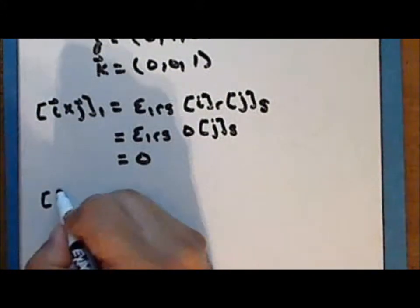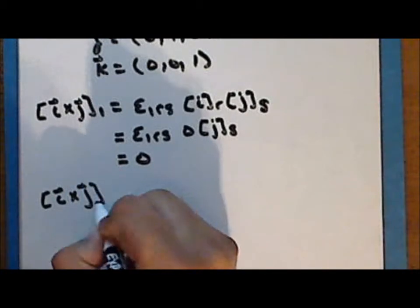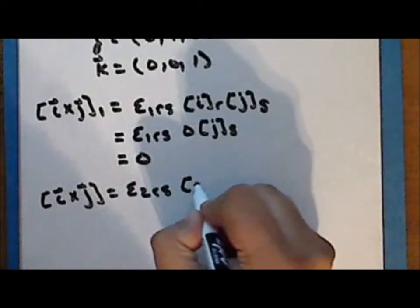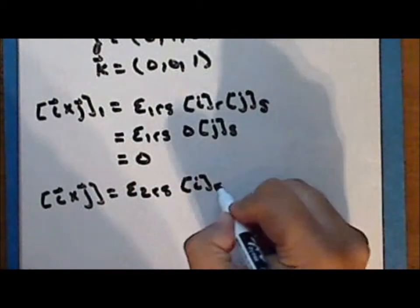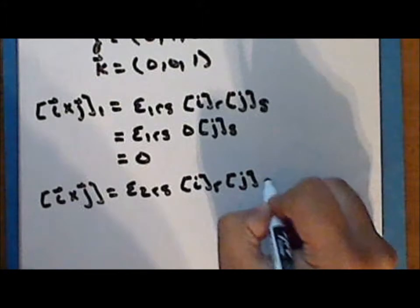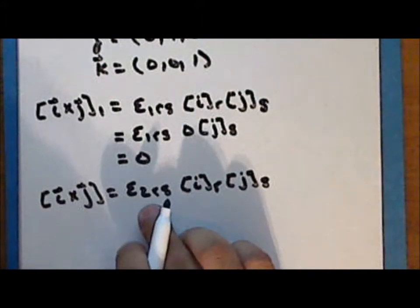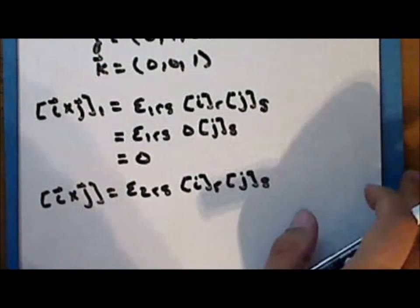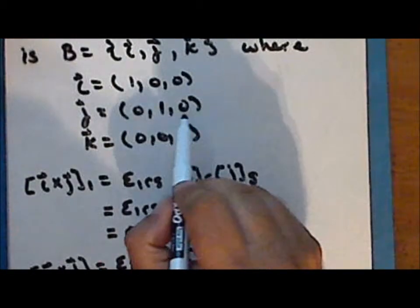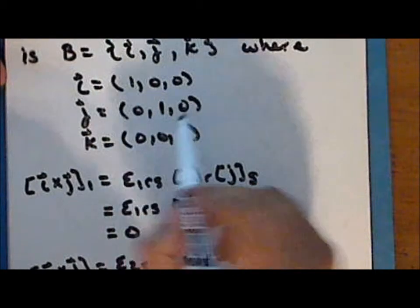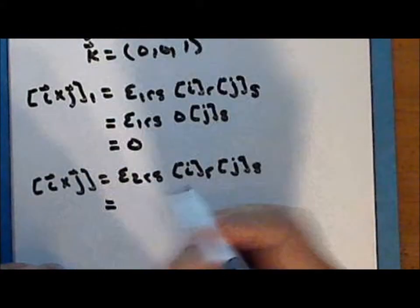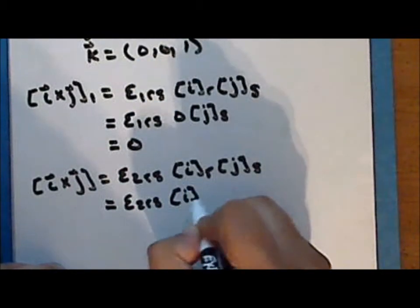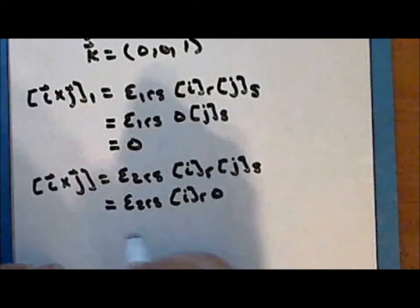The second component of i cross j is ε₂ᵣₛ times the R-component of vector i times the S-component of vector j. This is equivalent to ε₂ᵣₛ times the R-component of vector i times 0, which is 0.